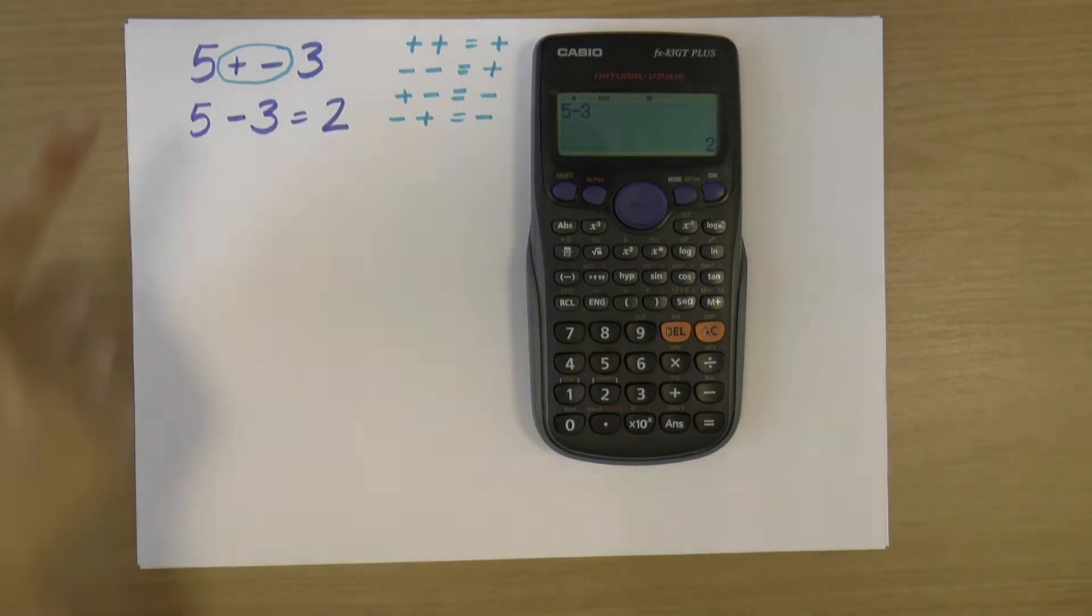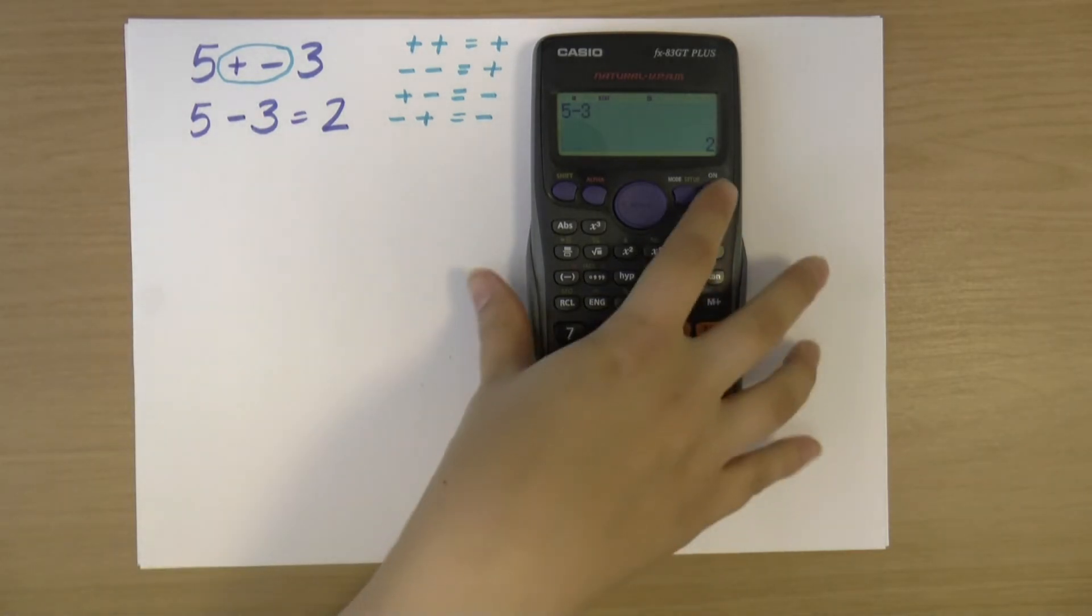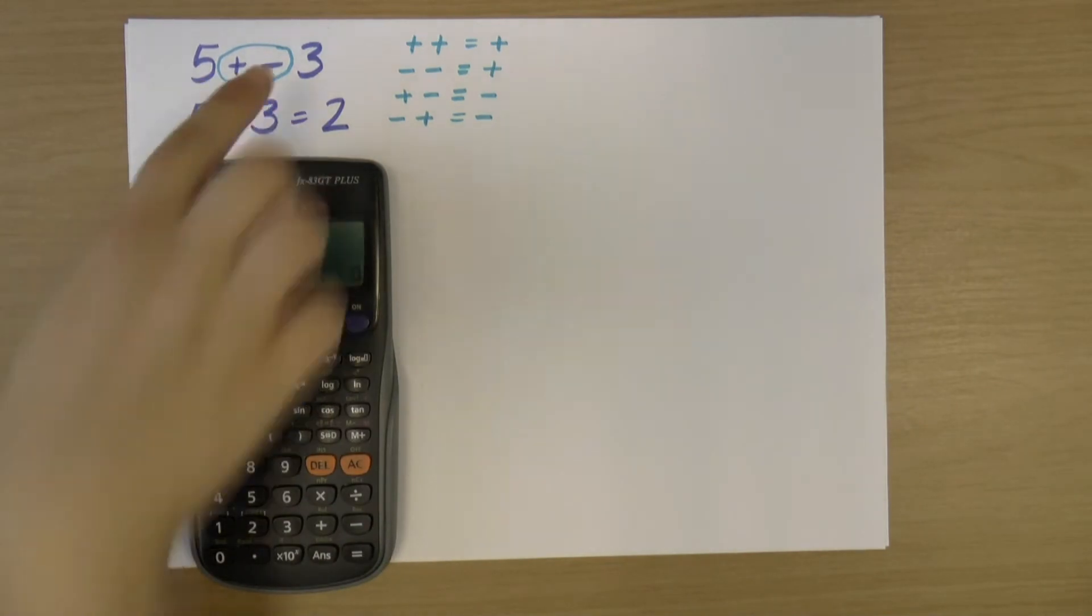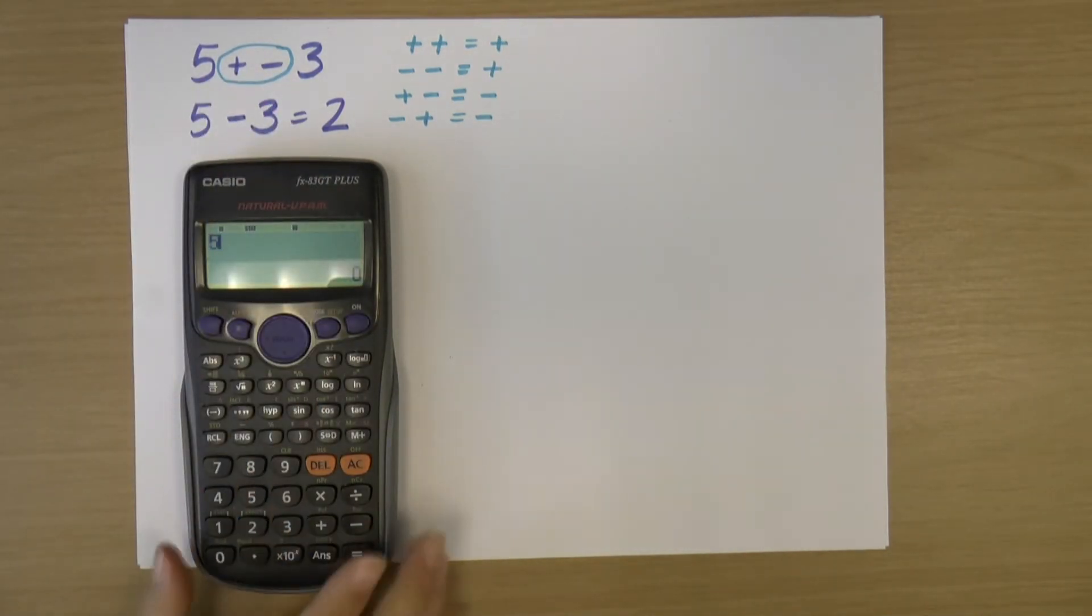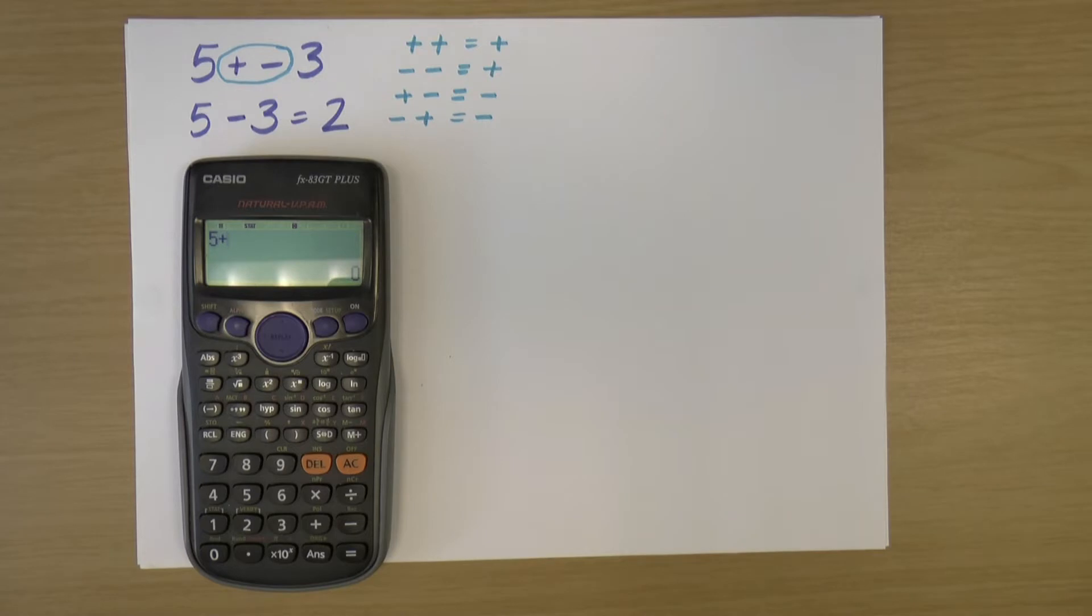Of course what I could do is put this into the calculator straight off. So if I've got 5 plus minus 3, I can do 5 plus minus 3. Now when I'm putting negative numbers into the calculator I don't use this symbol, I actually use this one.